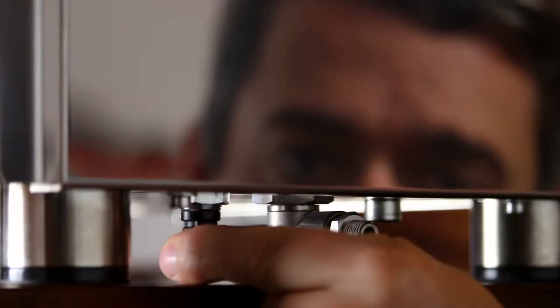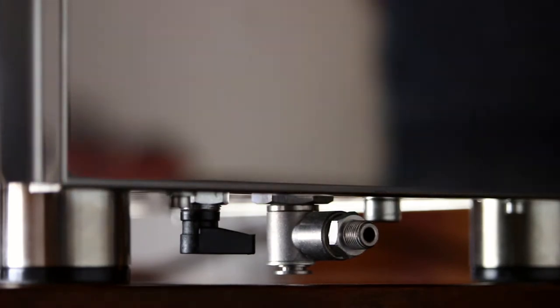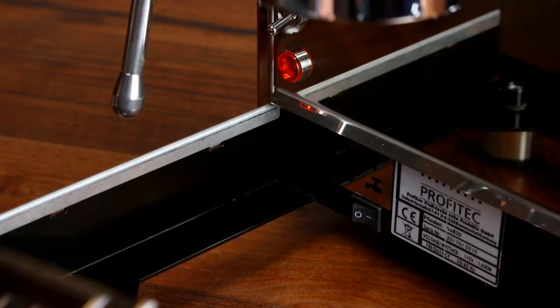If you prefer to plumb in your machine, turn the water source knob to this setting, and change the water source switch to the plumbed-in setting.